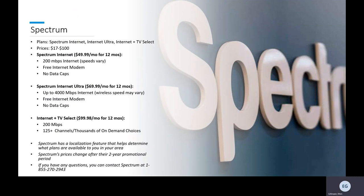Lastly, Internet Plus TV Select is a TV and internet bundle, so if you don't need TV along with internet, we don't recommend this option for you. At $99.98 a month, it comes with download and upload speeds of 200 megabits per second, 125-plus TV channels, and thousands of on-demand choices. These are only three of the plans Spectrum has to offer. To see what they are offering in your area, Spectrum has a localization feature similar to Google Fiber's, which can tell you what plans, prices, and products they have. Keep in mind that their prices change after their two-year promotional period, and they do have 12-month long contracts.